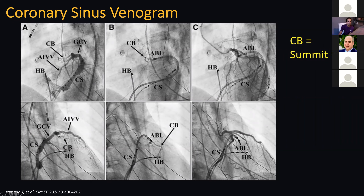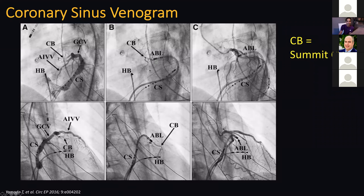Here's a static image showing the same anatomy: the coronary sinus turning into the GCV, the AIV coming straight down. In the spider view, the LAD would be running right against the AIV. The communicating branch runs septal in relation to the AIV. If you can get the ablation catheter right up against that, you can ablate the LV summit epicardially.